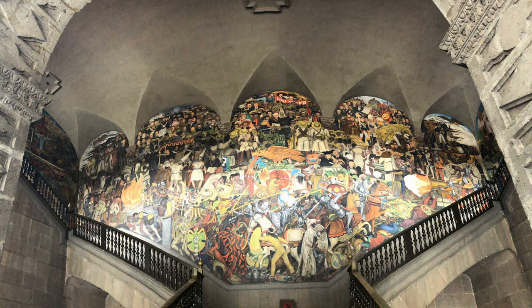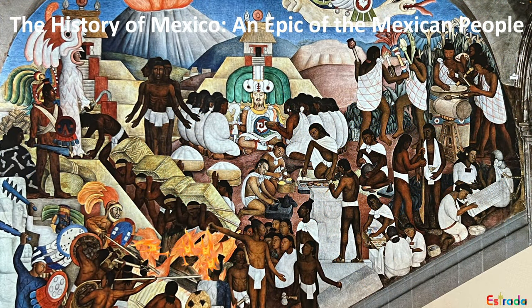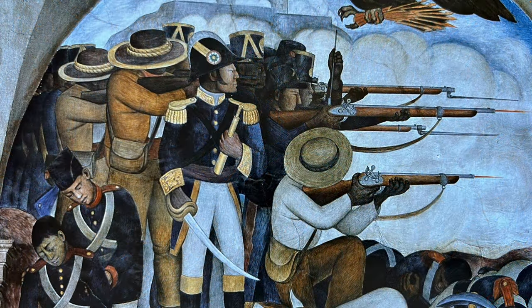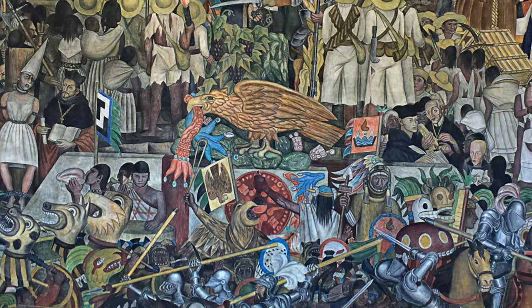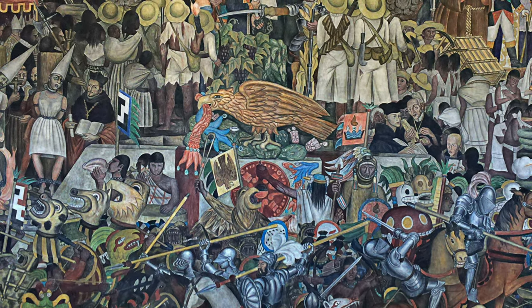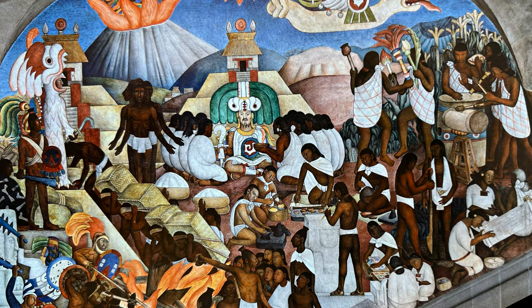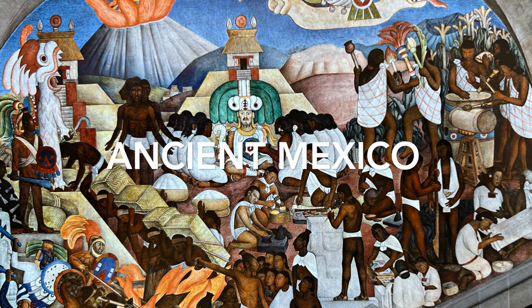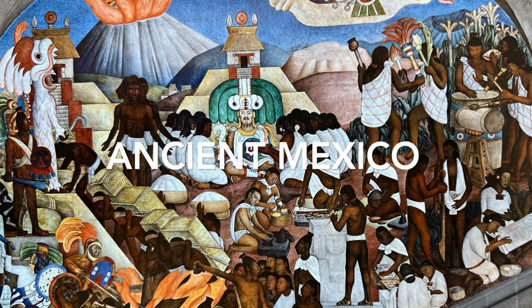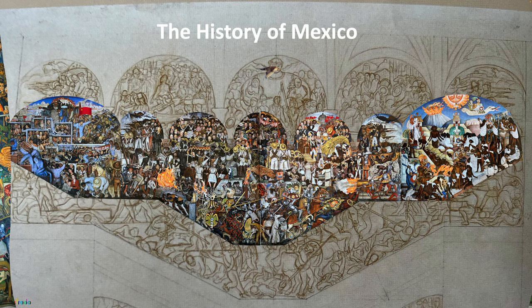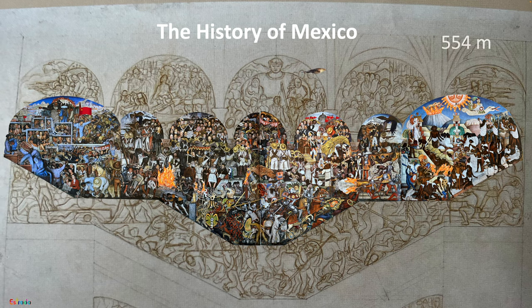This video explains the History of Mexico, an epic of the Mexican people — one of Diego Rivera's greatest fresco murals. The mural covers more than 2,000 years of Mexican history, spans 544 meters, and is located in Mexico City within the National Palace. This video will only fully explain the first panel, Ancient Mexico, painted from 1929 to 1930. Another video covers the entire mural in full detail.